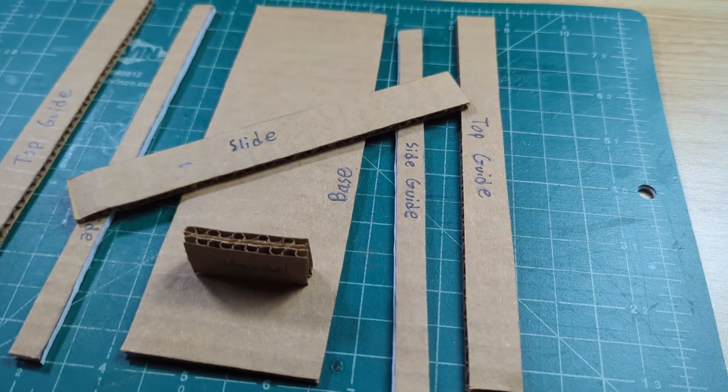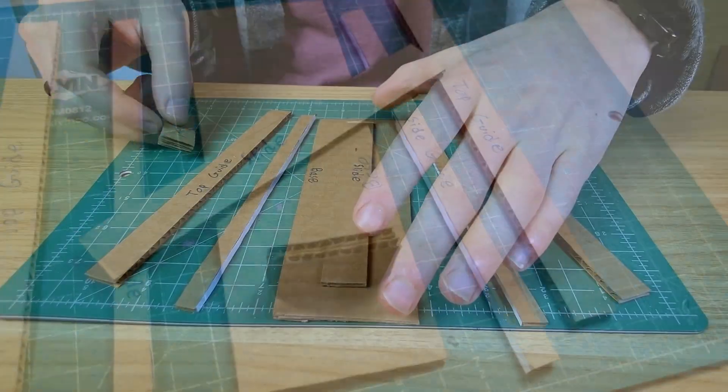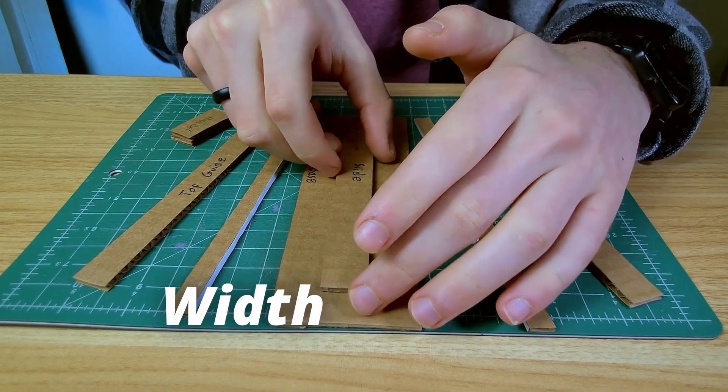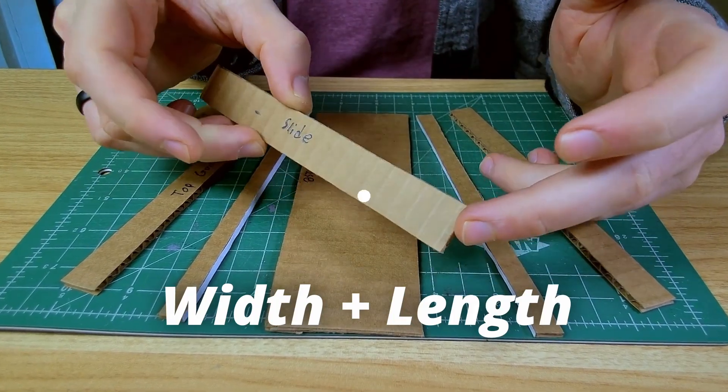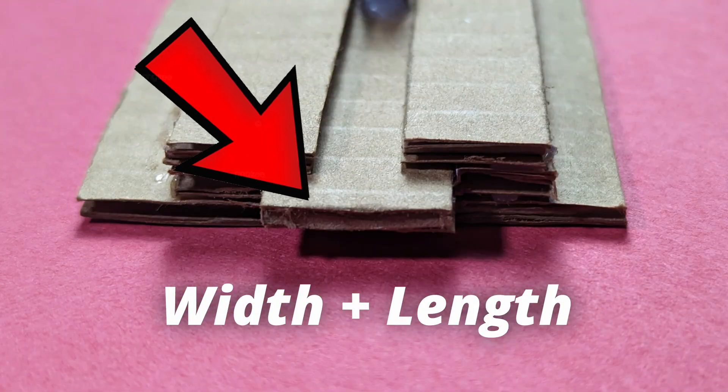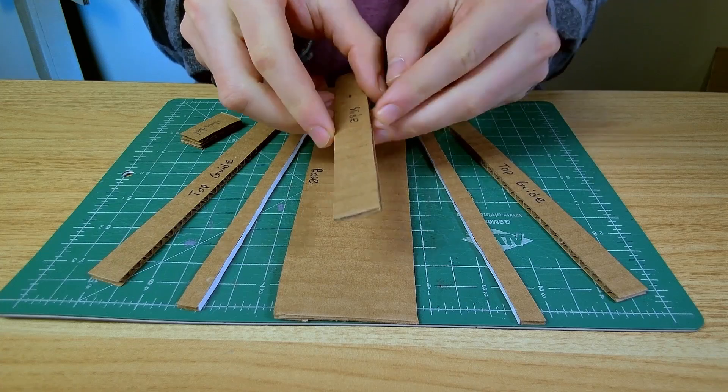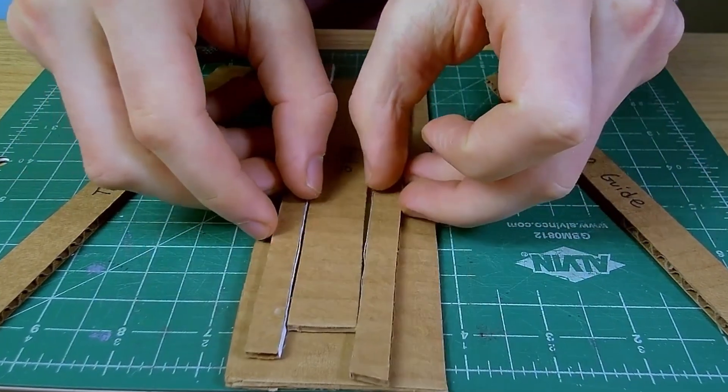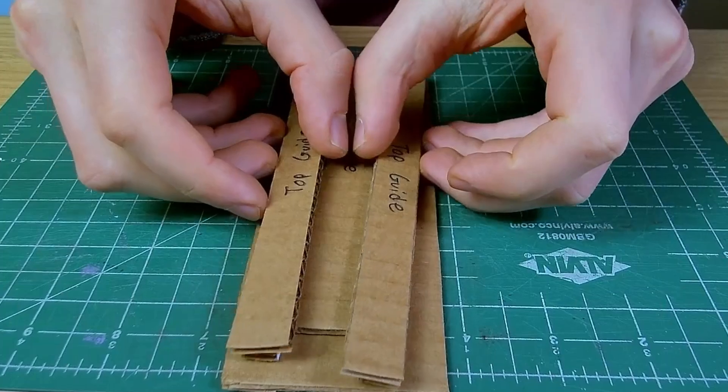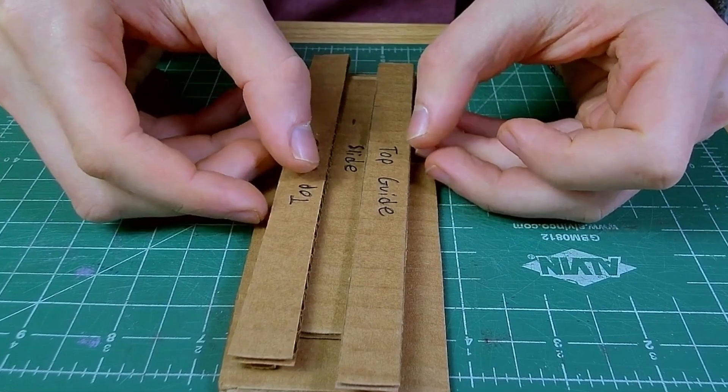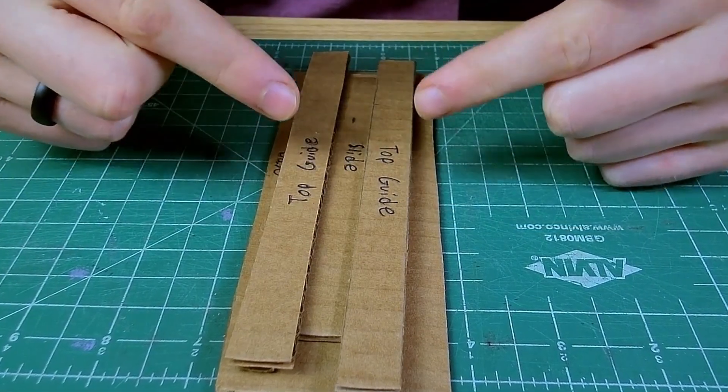The first thing you need to decide when you are making a slider like this is the width and length of the actual sliding part of the mechanism. The wider you go, the more room you will have for the top pieces, the top guides to hold down that slider, making a little bit of a stronger connection.